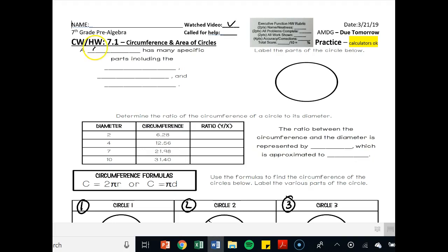Now let's do the notes first. A circle has many parts, including a radius, which goes halfway across the circle. Let's draw a radius here. If here's the center of the circle, something that goes halfway across is called a radius, labeled R.